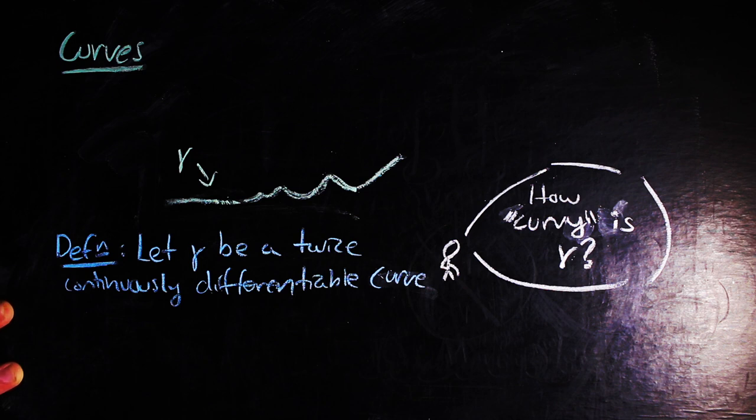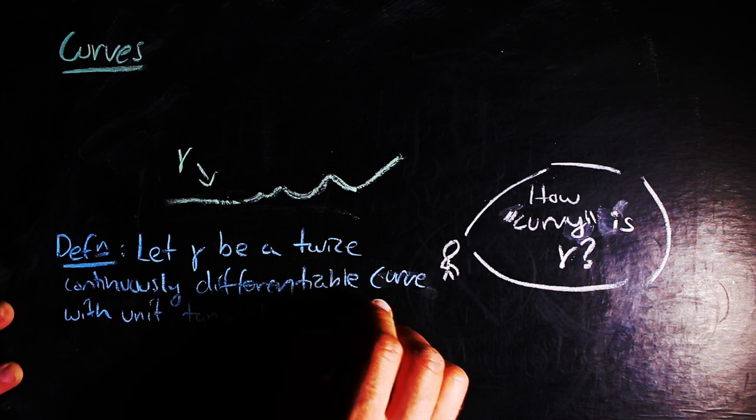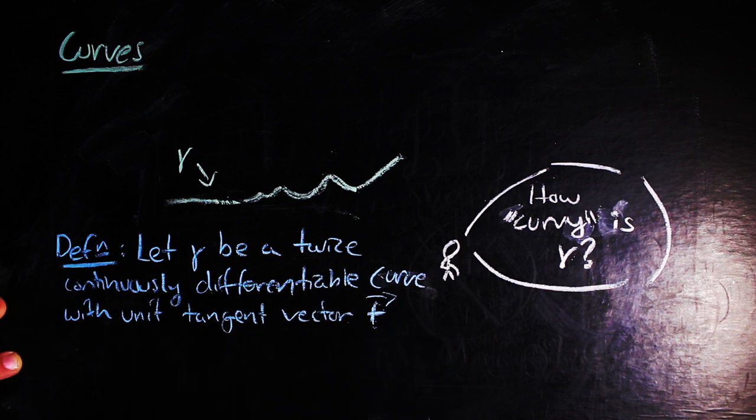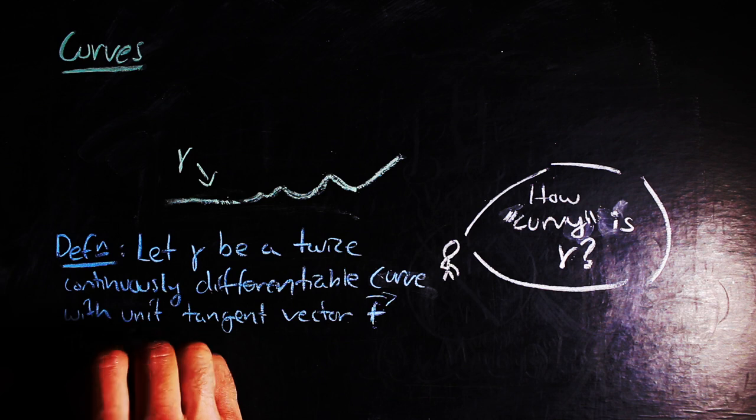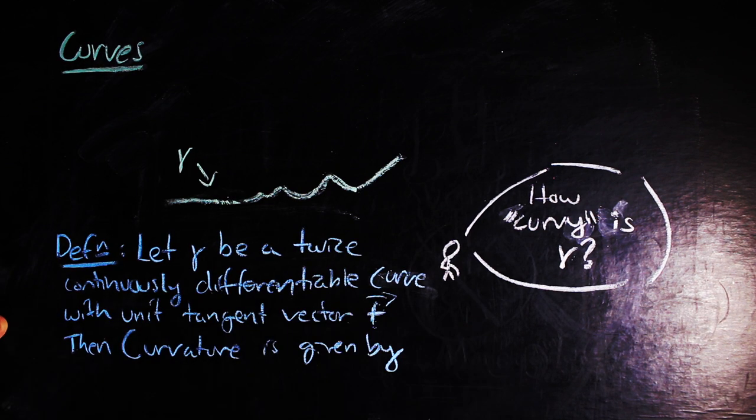So what is curvature? For those that are a bit more jargon-oriented, the curvature is given by the norm of the derivative of the tangent vector at a point with respect to arc length. That's a bit of a mess to say, but symbolically, it just means this.